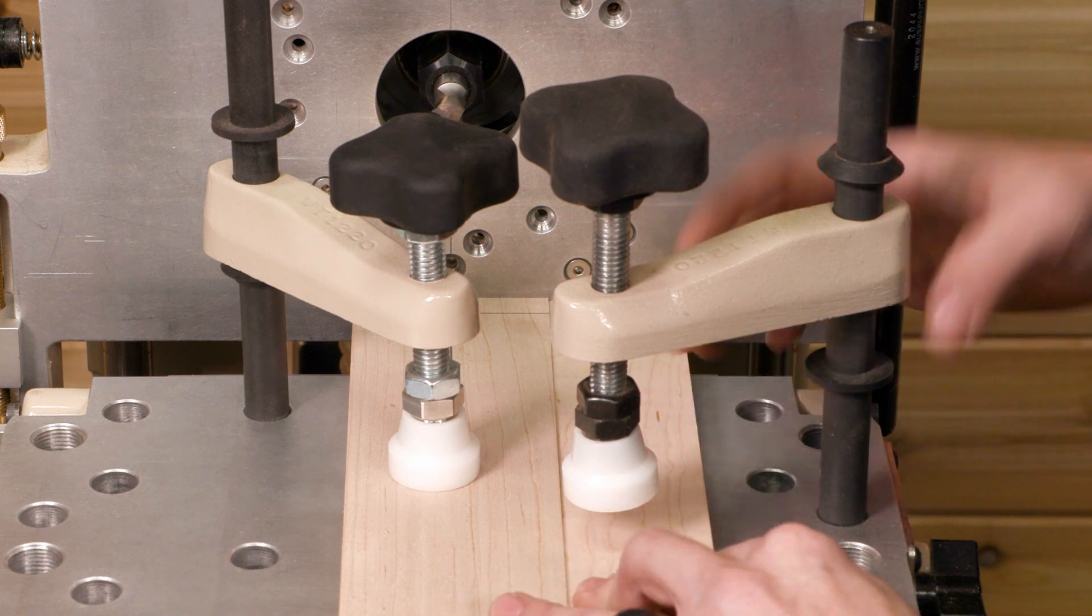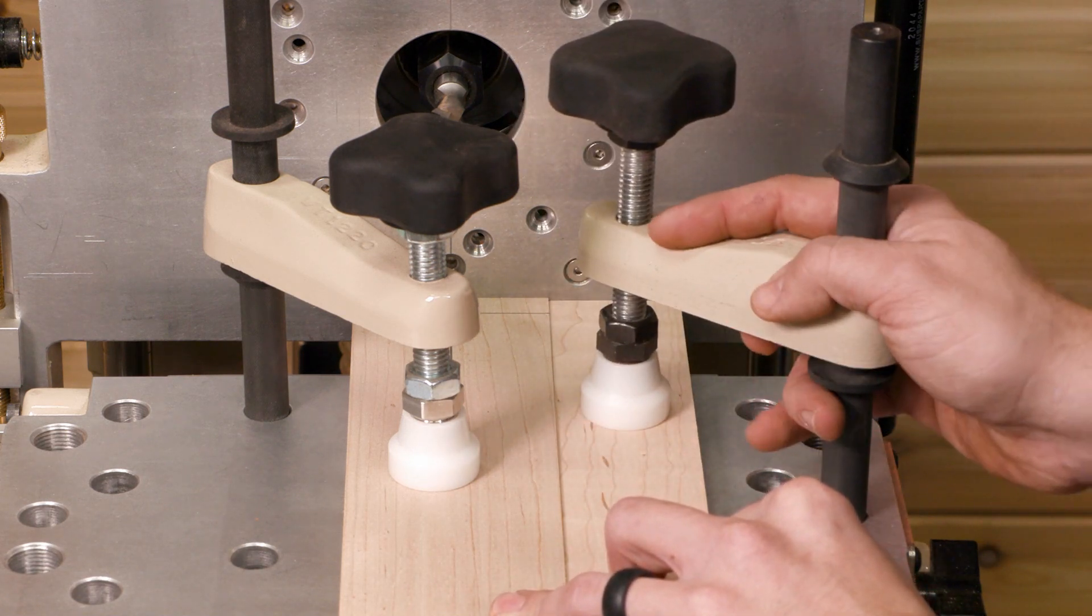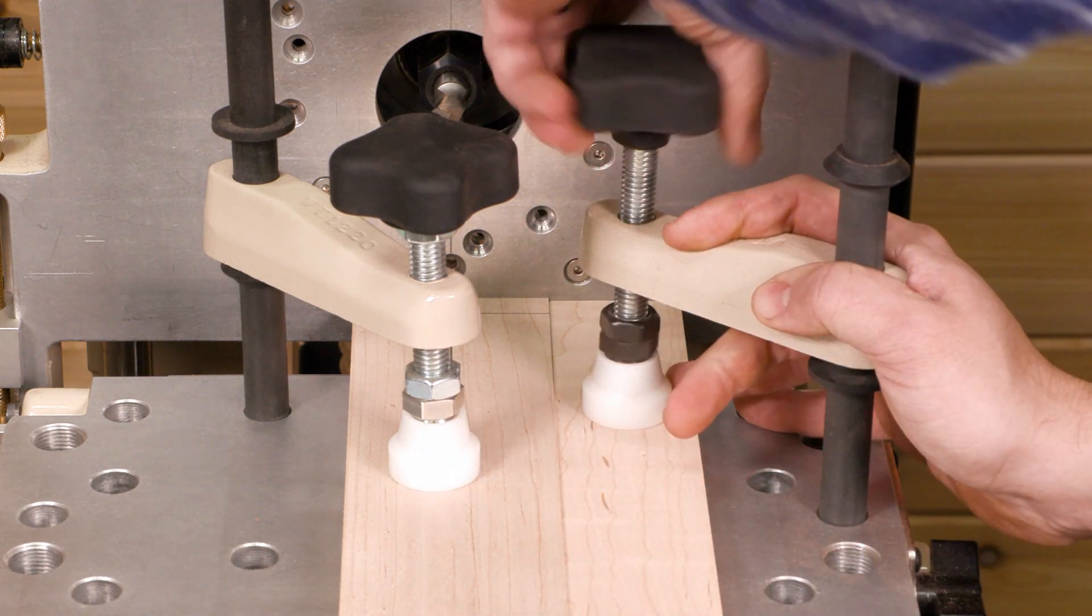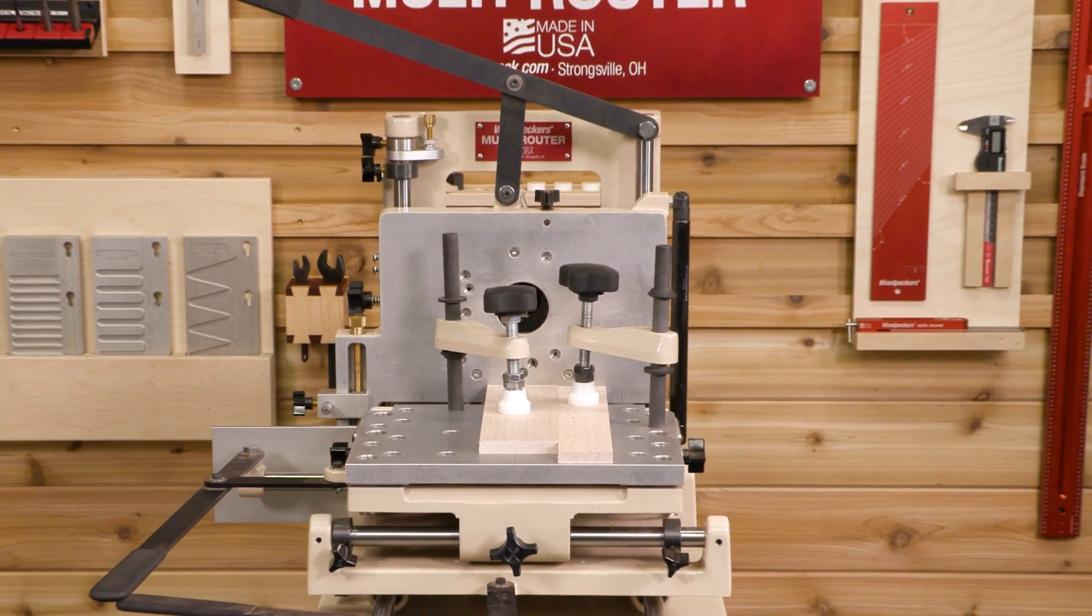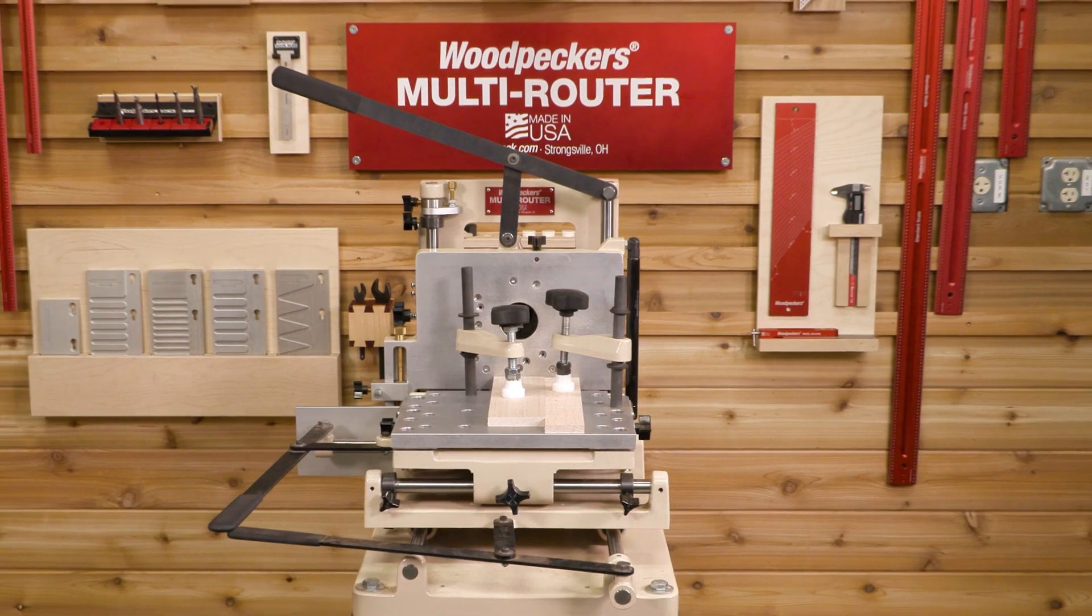Then clamp a square piece of stock against the edge of the workpiece to act as your fence. The position of the fence will remain the same for this entire process of cutting both the tails and pins.